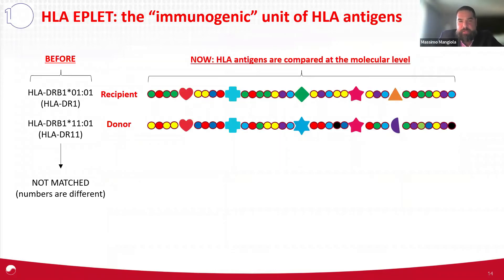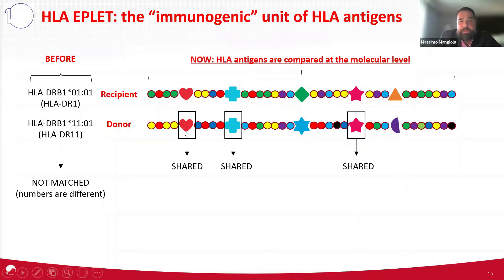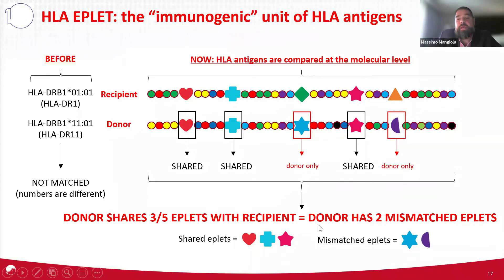What is behind the NKR and the calculation for eplets? We unravel these structures into a longitudinal amino acid structure, and now we can compare the molecular structure of the patient's and donor's HLA. In this example, the donor shares three out of five eplets with the recipient — the shared ones right here — or you can say the donor has two mismatched eplets with the recipient — these two right there.